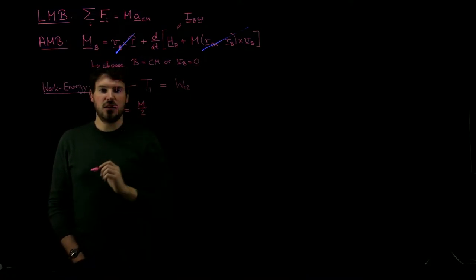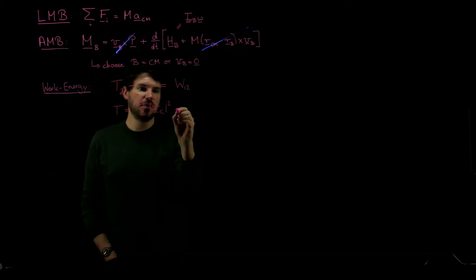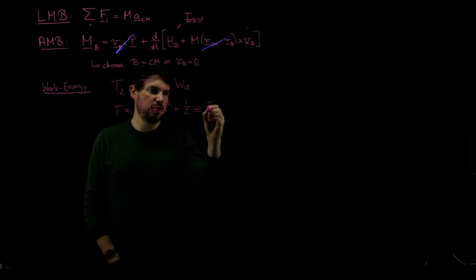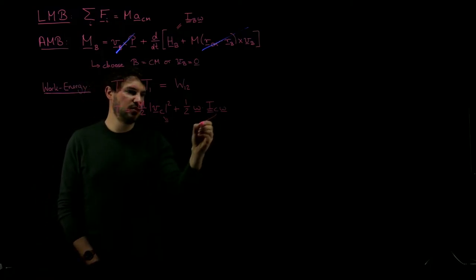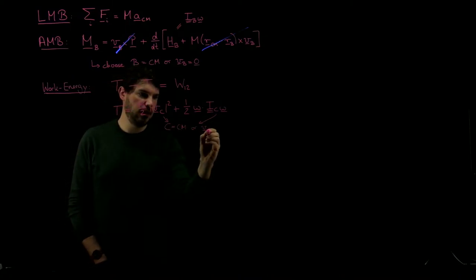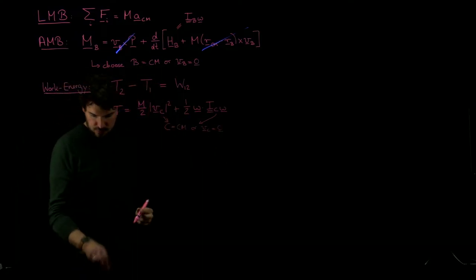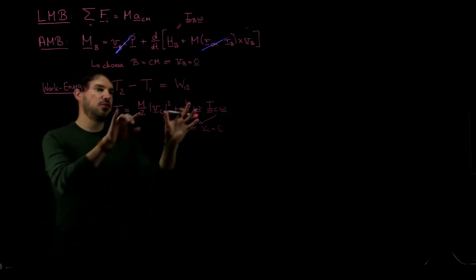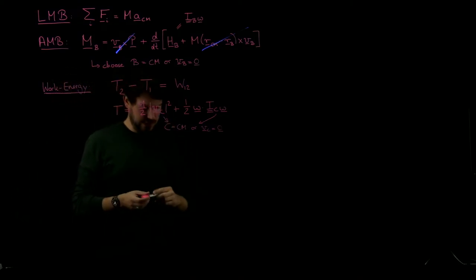The most important thing here is that the kinetic energy at any given time is two contributions: first, translation energy, which we write as one-half M times velocity of point C squared, plus rotational kinetic energy, which is one-half omega times IC times omega. Most importantly, what we showed in class is that this holds only for certain points C, namely if C is either the center of mass or it's a fixed point whose velocity is zero, in which case the first term disappears and it's a pure rotation.